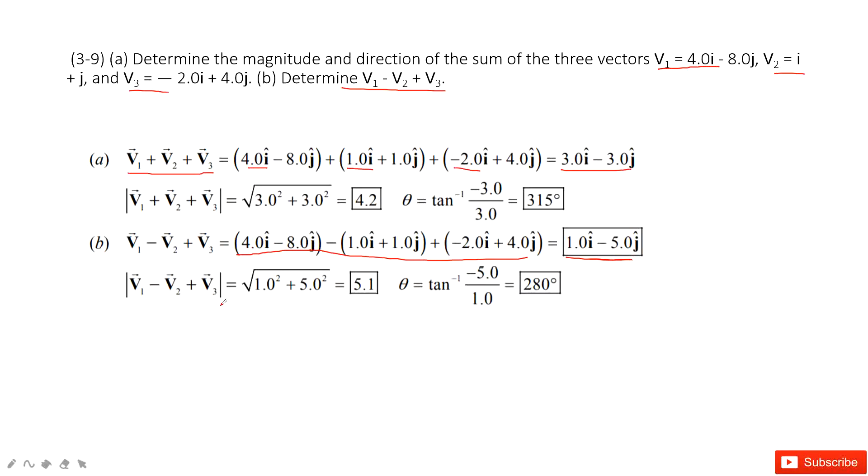For this one, we find the magnitude as i component squared plus j component squared and square root. And the angle theta is tan inverse of vy divided by vx. Thank you.